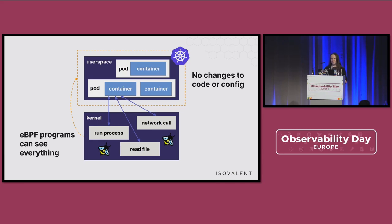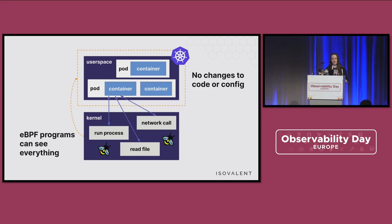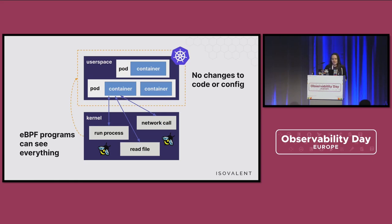One thing that makes eBPF so promising in the observability space is not only that there are no code changes, but also that there is very low performance overhead. eBPF programs run in kernel space, and we don't need to make as many calls to the kernel if we handle some of our observability logic in kernel space. This is why people in the observability space get so excited about eBPF — instrumenting for observability always adds overhead that nobody likes.